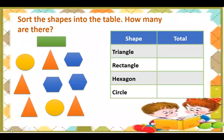Now, sort the shapes into the table. How many are there? The table has the headings: shape and total. Can you find how many triangles? There are 4 triangles. Rectangle: 1. Hexagon: there are 3 hexagons. And circle: 2 circles.